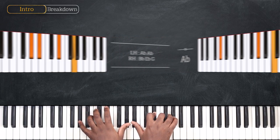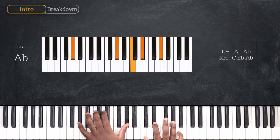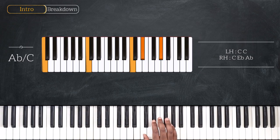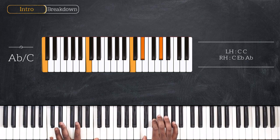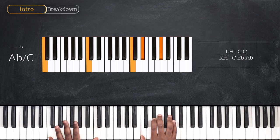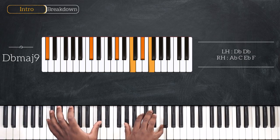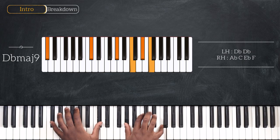Then we have a regular Ab major, now playing C, Eb and Ab on the right hand. Then, still playing the same notes on the right hand, we're going to change the left and play octave C — that will be Ab over C. Then we're moving up to Db major 9: octave Db, Ab, C, Eb and F.